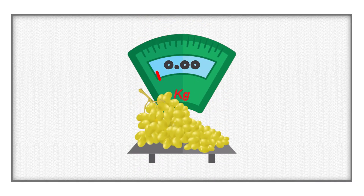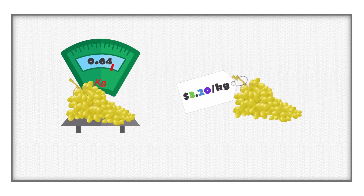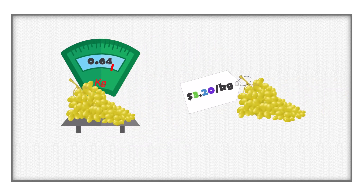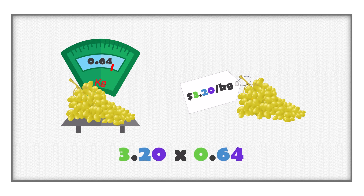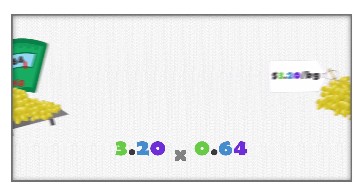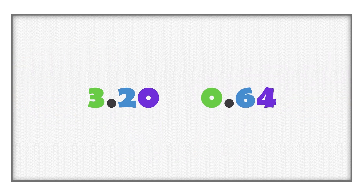For example, when buying grapes, we think about the cost and amount of grapes. How much would these grapes cost? Notice that the amount of grapes and the price are decimal numbers that include tenths and hundredths. In this video, we will focus on multiplying decimal numbers that include tenths and hundredths.